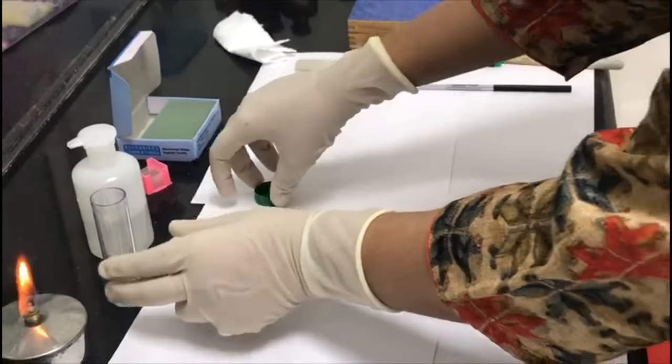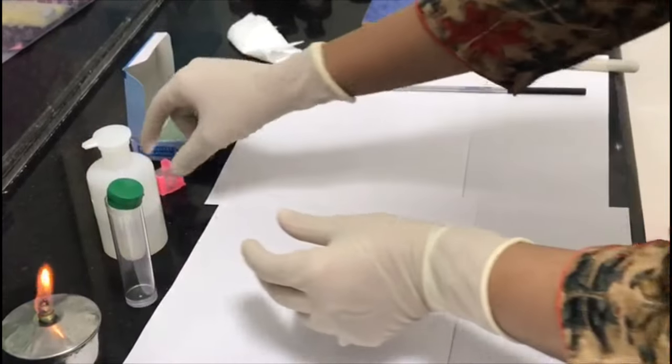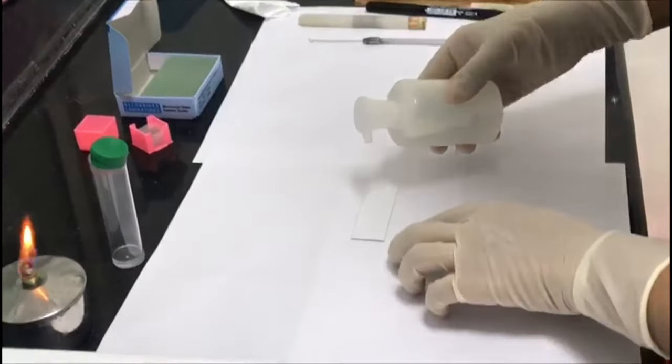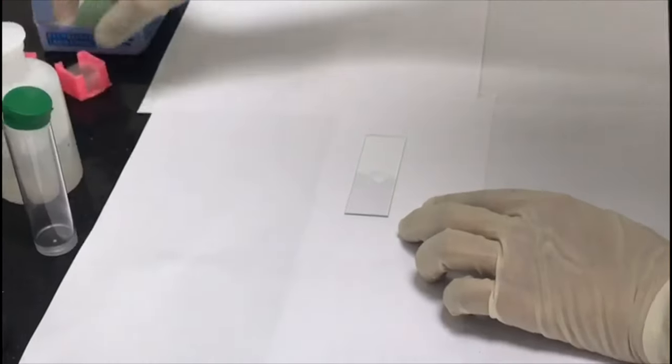Then put a drop of KOH, 10 to 20 percent depending on the sample to be examined. In case of tissue use 10% KOH, whereas in case of hair or nail take 20% KOH. Then keep a